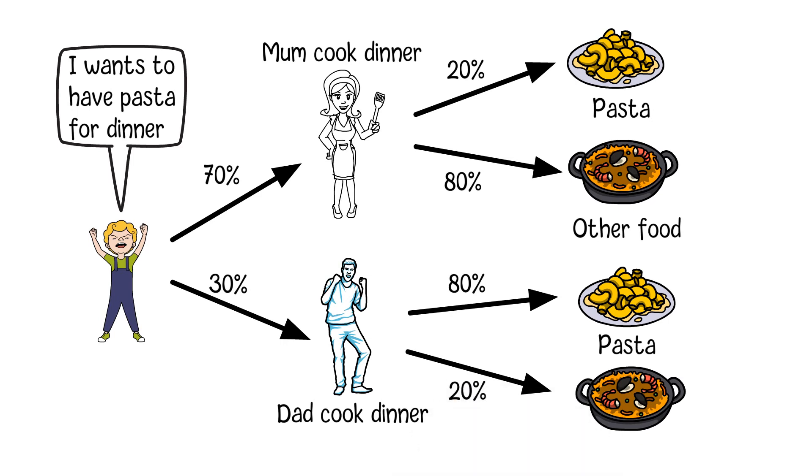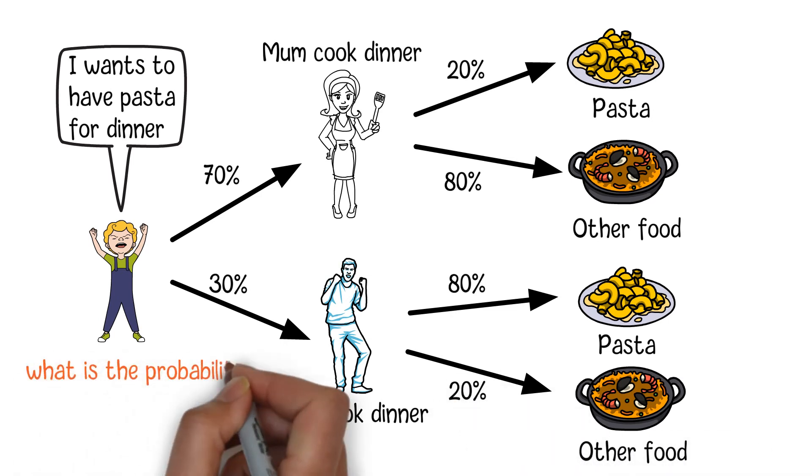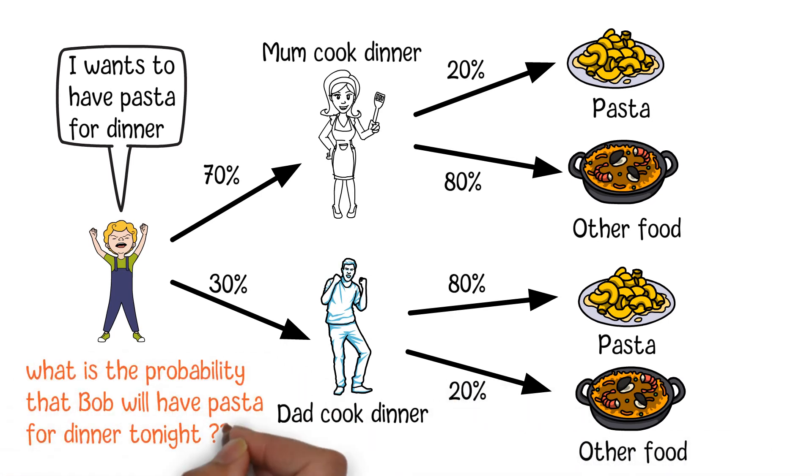So, the question is, what is the probability that Bob will have pasta for dinner tonight? We can put those conditions into a tree diagram and quickly get the result. The first level of the branch will be 70% for mom and 30% for dad. If we go one step further, we can put the probabilities to the second level as well. So, we can get the following result.